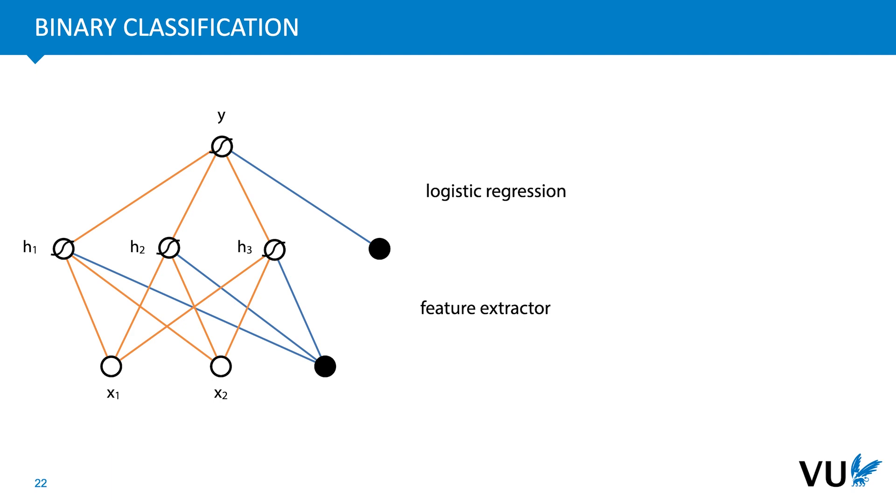If we have a classification problem with two classes, which we'll call positive and negative, we can place a sigmoid activation on the output layer so that the output is between 0 and 1. We can then interpret this as the probability that the output has the positive class, according to our network.